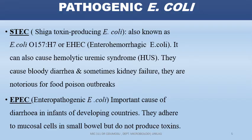We also have EPEC, the enteropathogenic E. coli, which is an important cause of diarrhea in infants in developing countries. They possess virulence factors which include bundle-forming pili and fimbriae that attach to intestinal epithelial cells, with effacing toxin destroying cell membranes. They adhere to mucosal cells in the small bowel but do not produce toxins. The mechanism of action is to cause cell death and fluid secretion after attaching to the epithelial cells, leading to symptoms such as watery diarrhea, vomiting, nausea, and abdominal cramps. Food sources include contaminated milk, vegetables, or water.